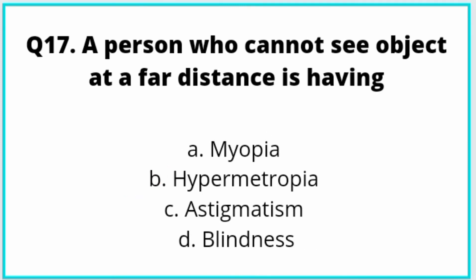Next question: A person who cannot see objects at far distance is having which condition? Option A is correct: myopia.